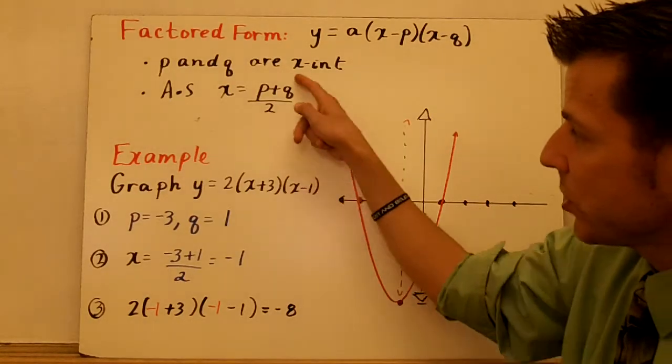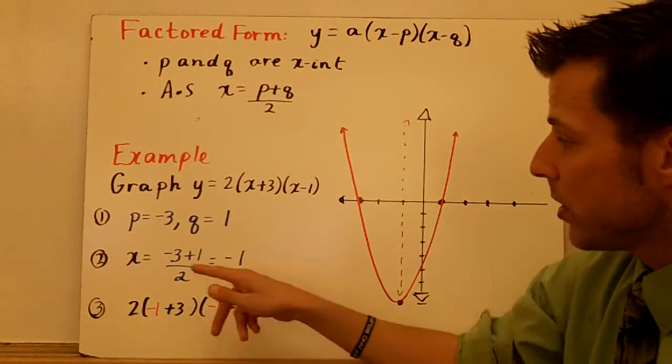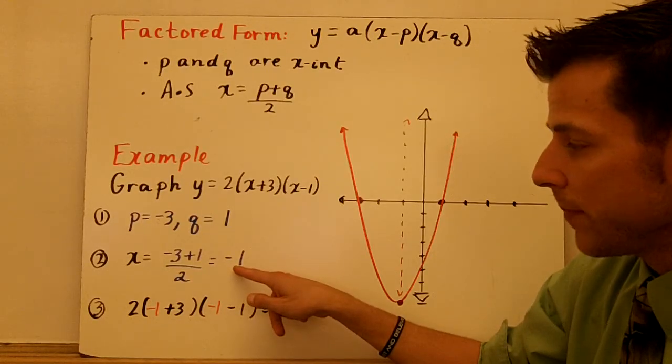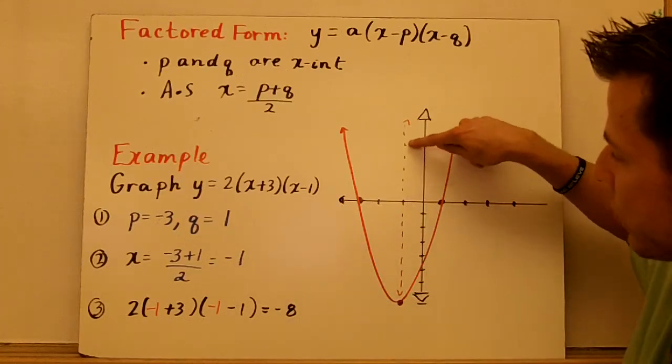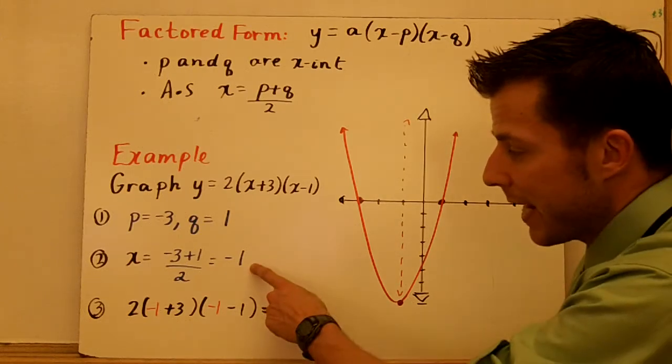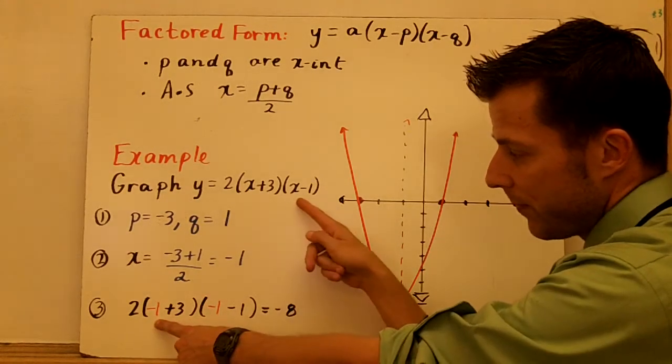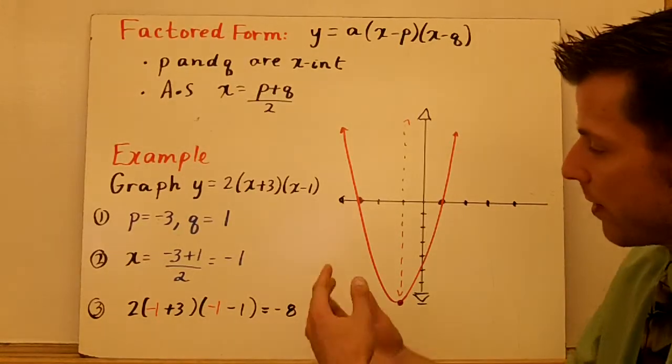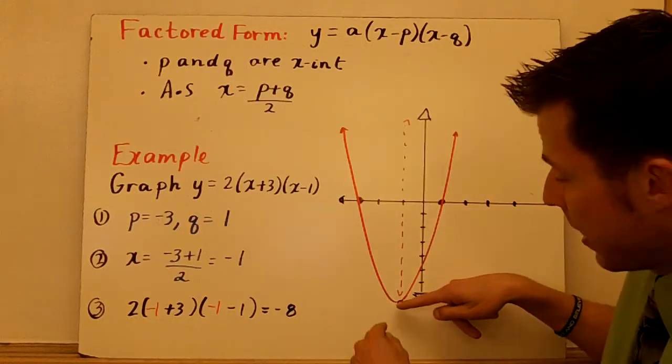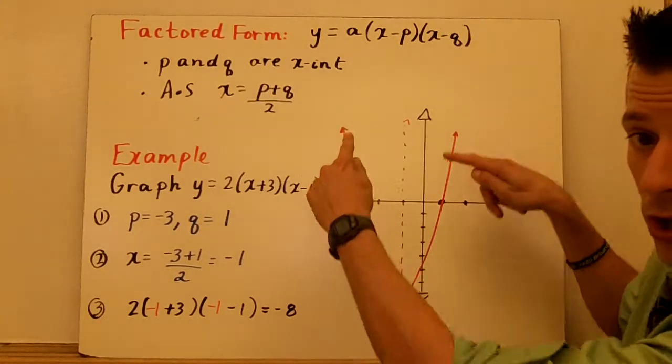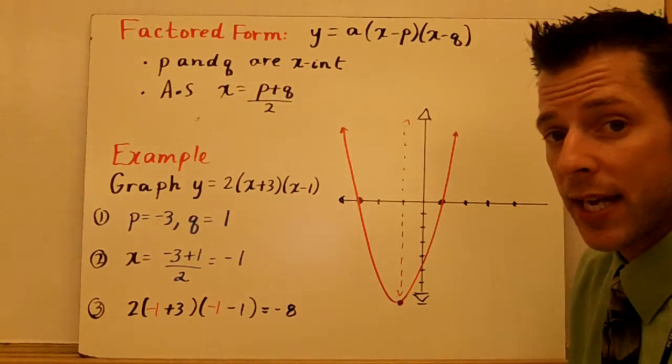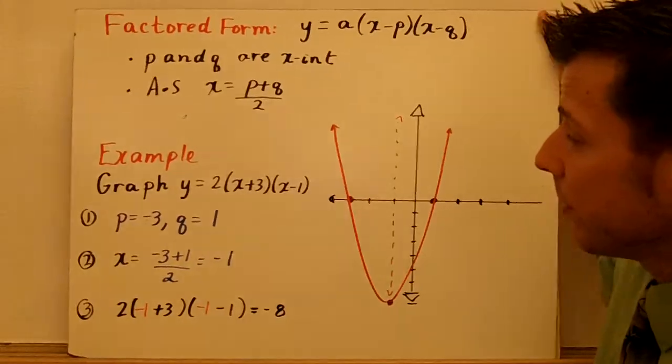The axis of symmetry here is always halfway between those. So you take negative 3 plus 1 divided by 2. That equals negative 1. So there's my axis of symmetry on negative 1. It's also the x-coordinate of my vertex. So I plug that negative 1 back into my function, and I get negative 8. So my vertex is negative 1, negative 8. So there's that vertex, and I connect the points with a smooth curve. So factored form tells us the x-intercepts. And it doesn't tell us the vertex. Let's look at one more example of that.